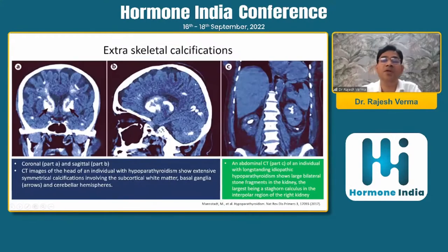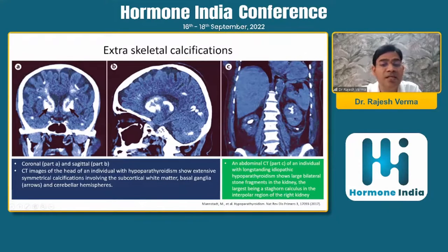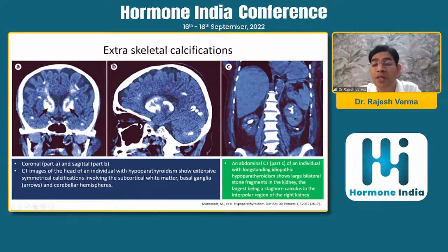This is a picture showing extra-striatal calcifications — a coronal and sagittal CT head of an individual with hypoparathyroidism, showing extensive symmetrical calcifications involving the subcortical white matter, basal ganglia, and cerebellar areas. This is an abdominal CT of an individual with long-standing idiopathic hypoparathyroidism who is on treatment, showing bilateral large renal stones, the largest being a staghorn calculus.